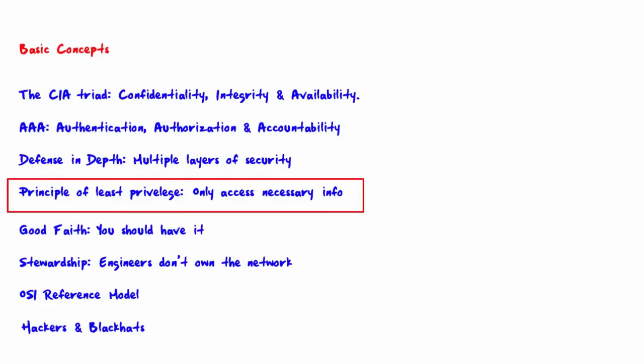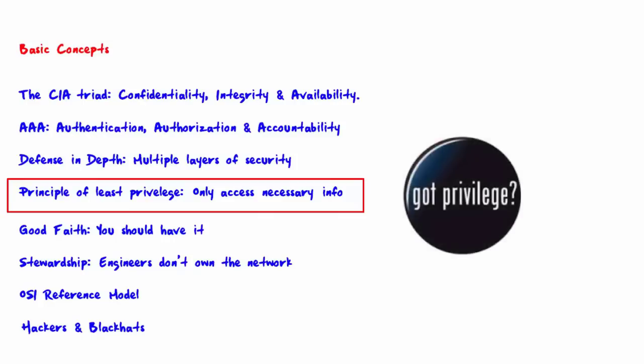The next concept is the principle of least privilege, which means you should only be able to access necessary information. A user must only be able to access information on the network that is necessary to do their job. Likewise, a process must only be able to access the network resources it needs to perform the legitimate services of that process.